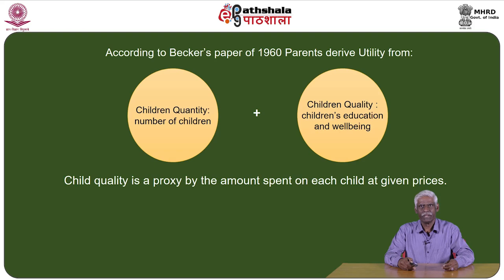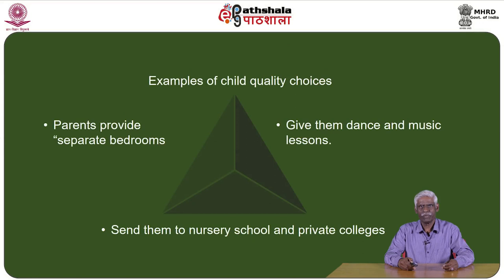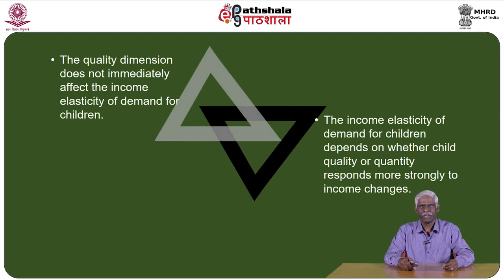In his 1960 paper, Becker conjectured that parents derive utility from both the number of children — that is, children in quantitative terms — and from children's education and well-being — that is, children from a quality angle. Child quality is proxied by the amount spent on each child at given prices. Examples of child quality choices Becker mentions include whether parents provide separate bedrooms, send children to nursery schools and private colleges, or give them dance and music lessons.